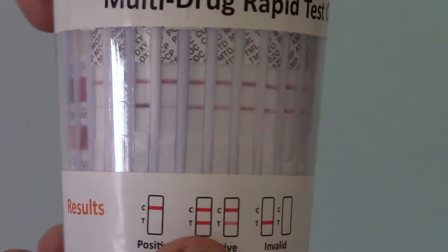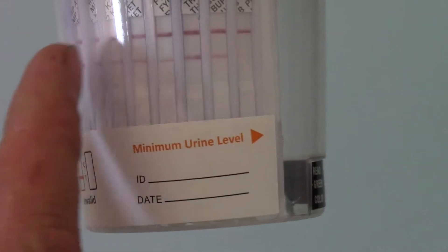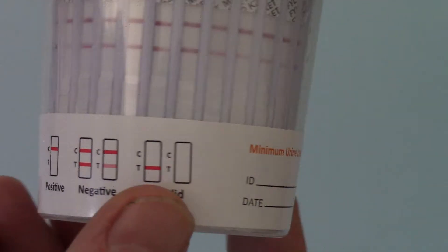Now you will see all 16, we've got really nice strong control lines along the top. The control line is the top line that forms nearest the abbreviation for the drug code. And then if we compare all the test lines,